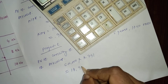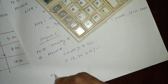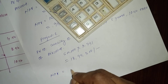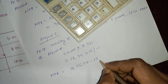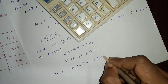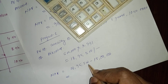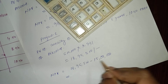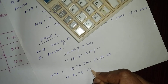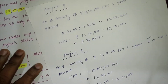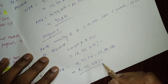So three point seven nine one into five lakh equals eighteen lakh ninety five thousand five hundred. NPV for Project C: eighteen lakh ninety five thousand five hundred minus initial cost fifteen lakh equals three lakh ninety five thousand five hundred. Summary: Project A NPV is fifty eight thousand two hundred, Project B ninety seven thousand two hundred, Project C three lakh ninety five thousand five hundred.